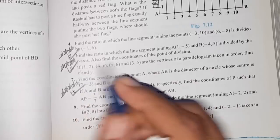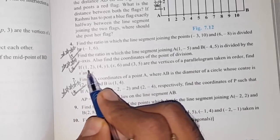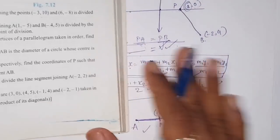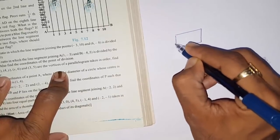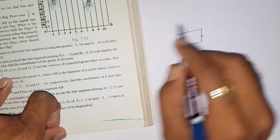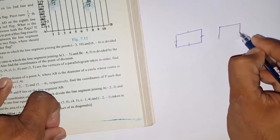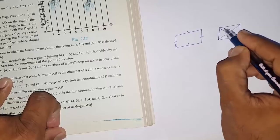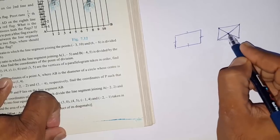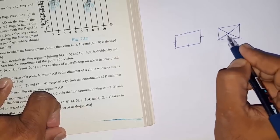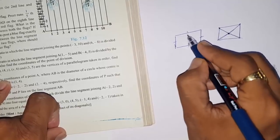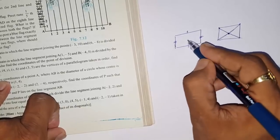One of the most important questions asks: given four vertices of a parallelogram, find x and y. Many students try to use the distance formula on opposite sides, but since two variables are unknown, that won't work. Instead, use the midpoint formula. Since the diagonals of a parallelogram bisect each other, find the midpoint of each diagonal, then equate the x-values and y-values of both midpoints to solve for x and y.